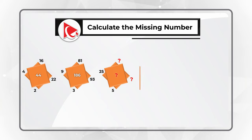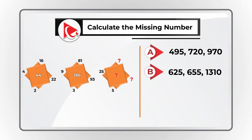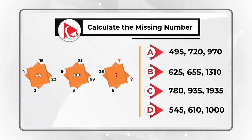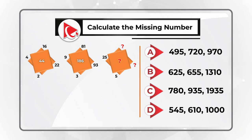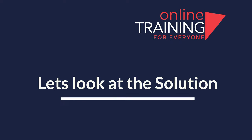You need to select the missing three numbers from four choices: choice A — 495, 720, and 970; choice B — 625, 655, and 1310; choice C — 780, 935, and 1935; and choice D — 545, 610, and 1000. Typically you get between 20 and 30 seconds on the real test, so feel free to pause this video if you need more time.